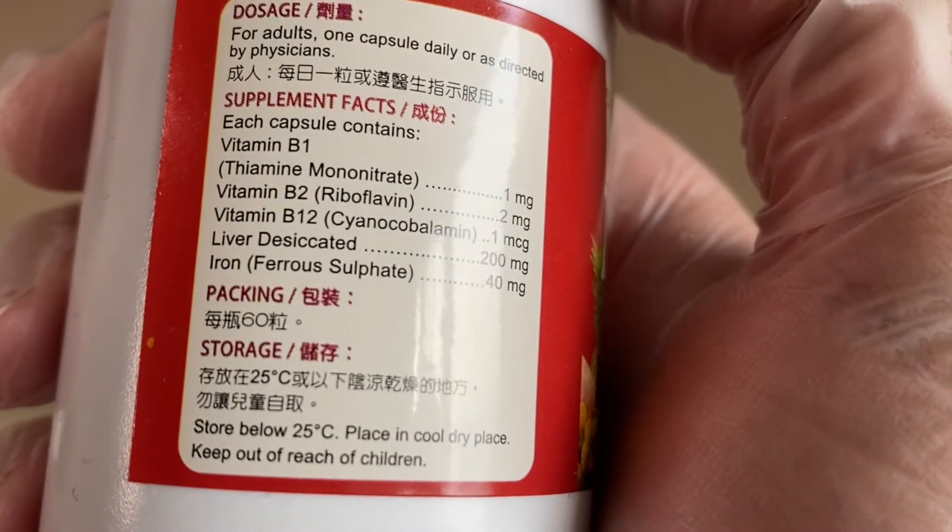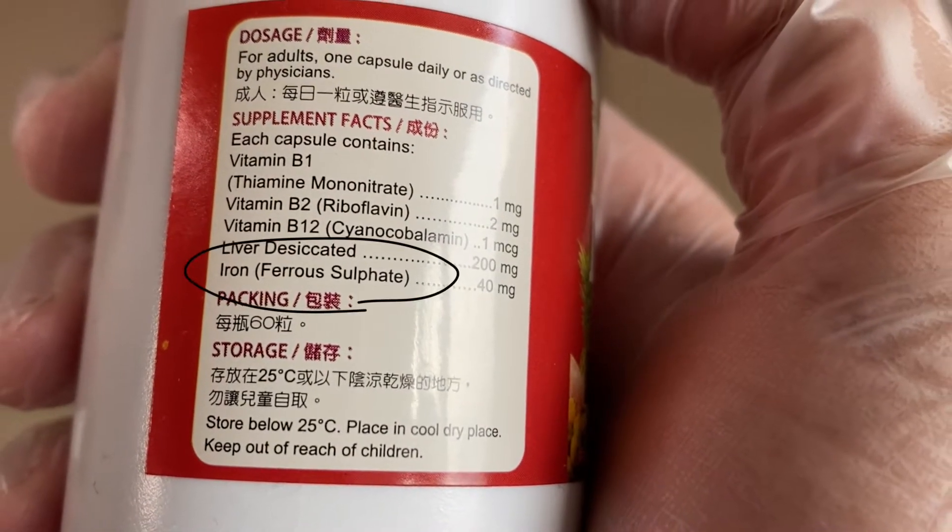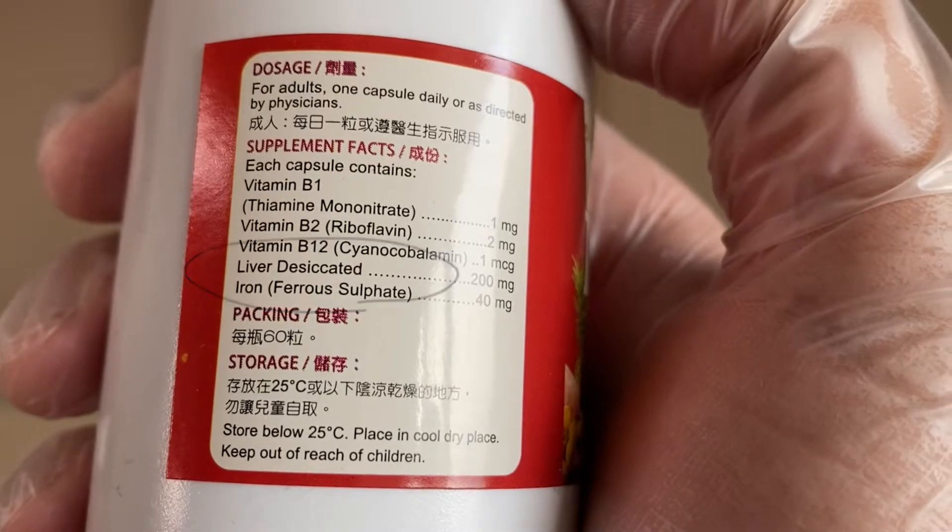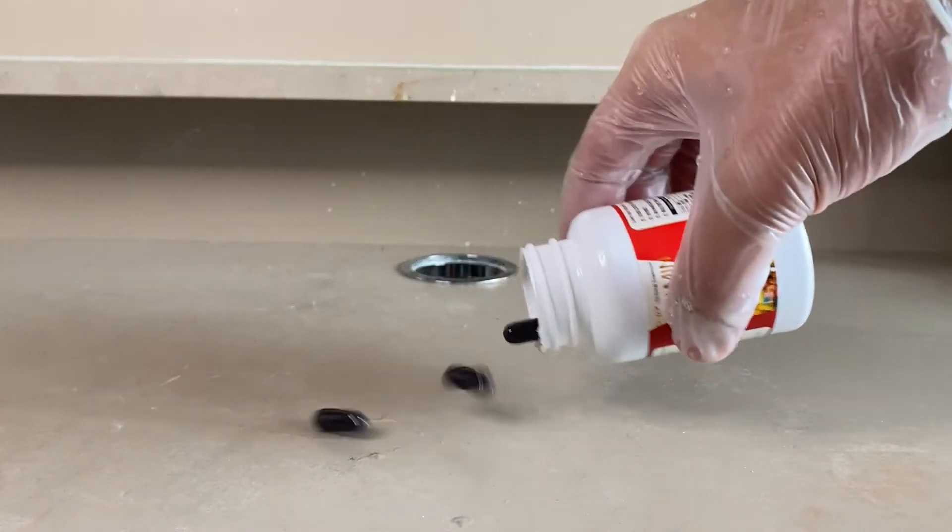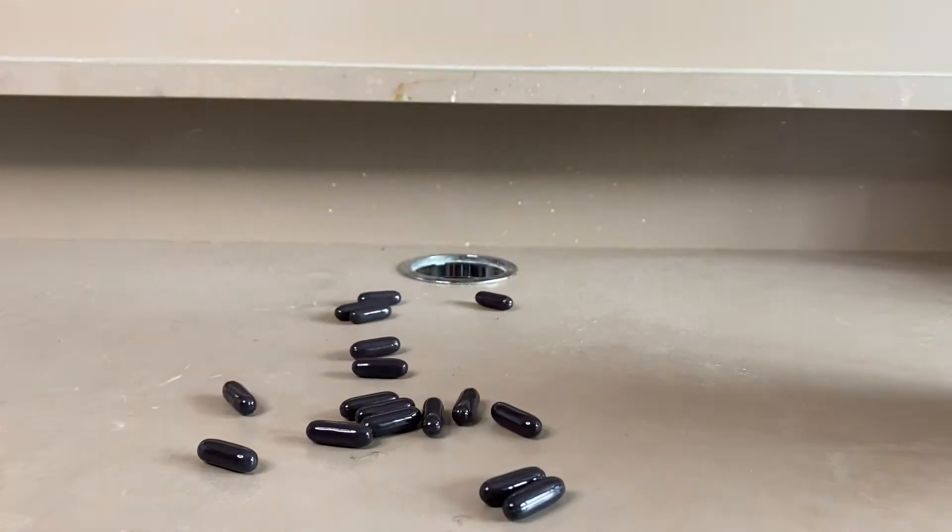One of the ingredients in vitamin pills is iron in the form of ferrous sulphate and today we're going to extract it and turn it into metallic iron.